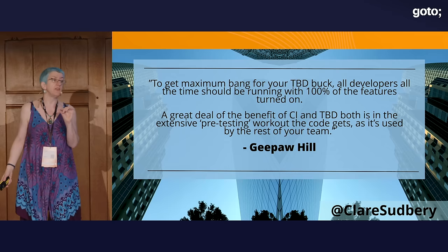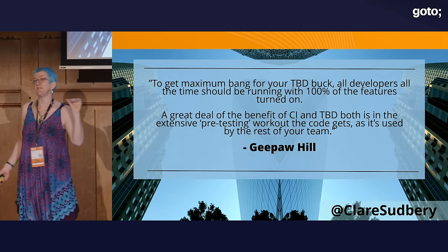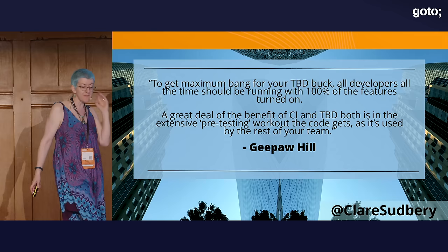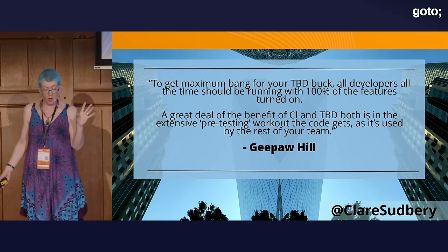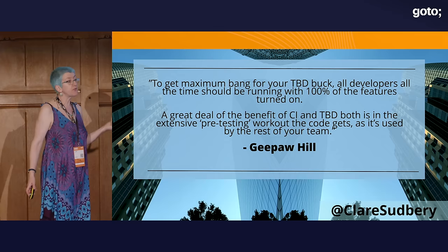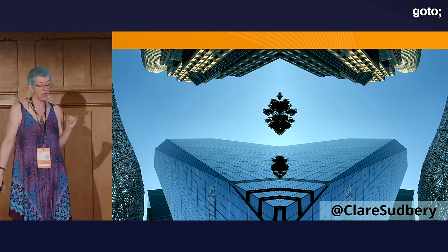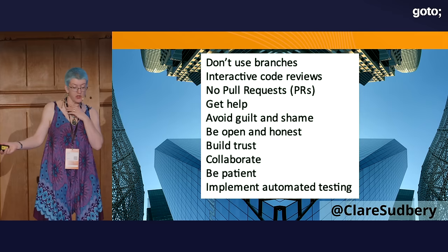You don't have to use feature flags in your code base. You can write modular, well-factored code that is not visible to the end user. You can use feature flags in your UI, but your code can be passing tests and working — each tiny bit works, it's just not being used by the user interface. G. Paul Hill says: to get maximum bang for your trunk-based development, all developers all the time should be running with 100% of the features turned on, because a great deal of the benefit is in the extensive pre-testing workout the code gets as it's used by the rest of your team.